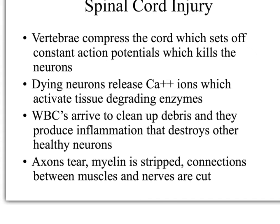Those enzymes can spill onto healthy neurons as well and cause further damage. White blood cells also arrive to the area to clean up the debris and get rid of old dead and dying cells. They cause inflammation, which can cause further mechanical stimulation on healthy neurons, leading to constant action potentials being fired again and more neurons being destroyed. So when an injury happens, we really have to wait an extended period of time to figure out the full extent of the damage, while that swelling and inflammation and white blood cell activity continues — more tracks can be damaged and die.